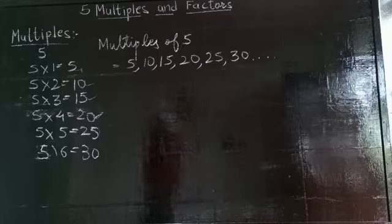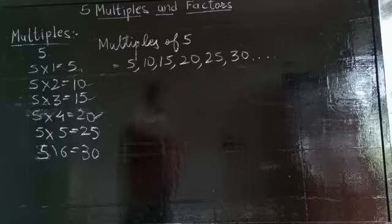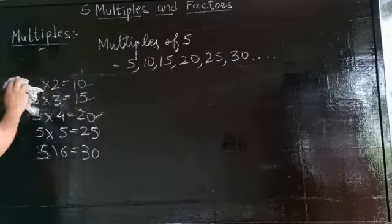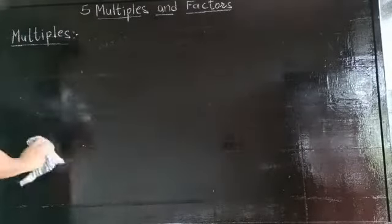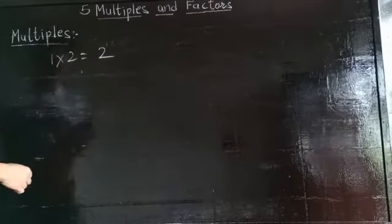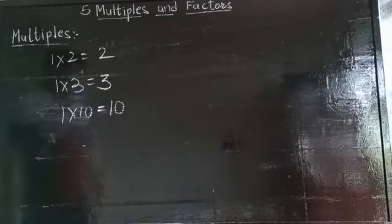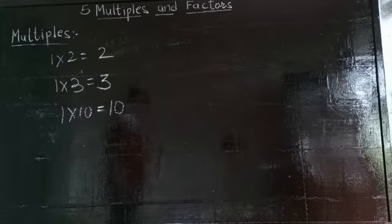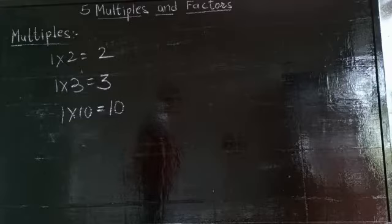Now the properties of multiples: every number is a multiple of 1. Whenever we multiply 1 by a number, we get the number itself. For example, 1 times 2 is 2, 1 times 3 is 3, 1 times 10 is 10. So every number is a multiple of 1. We can say that every number is a multiple of 1.